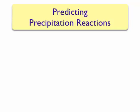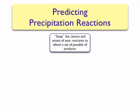The following guidelines are useful in predicting precipitation reactions. The first step is to generate a set of possible products. This can be accomplished by swapping the cations and anions of your reactants. This is called a double displacement or metathesis reaction.